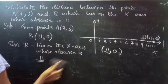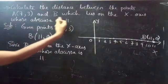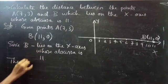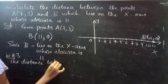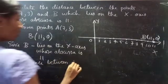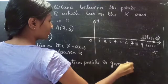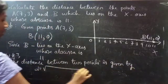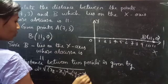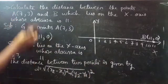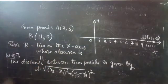Fine. So now, what we have to do? We have to find the distance between A and B. We know that the distance between two points is given by d equals square root of (x2 minus x1) whole square plus (y2 minus y1) whole square. So we will use this formula to find the distance between the given points.